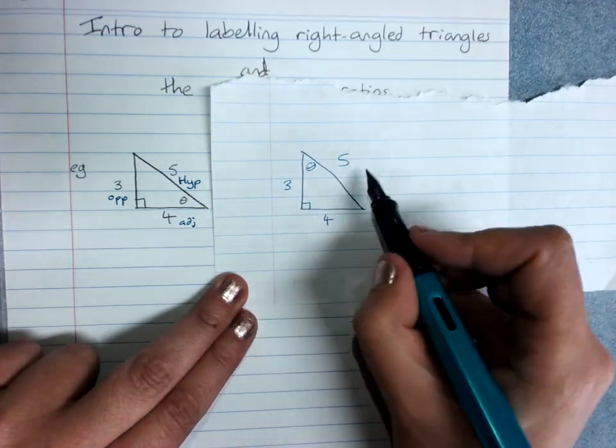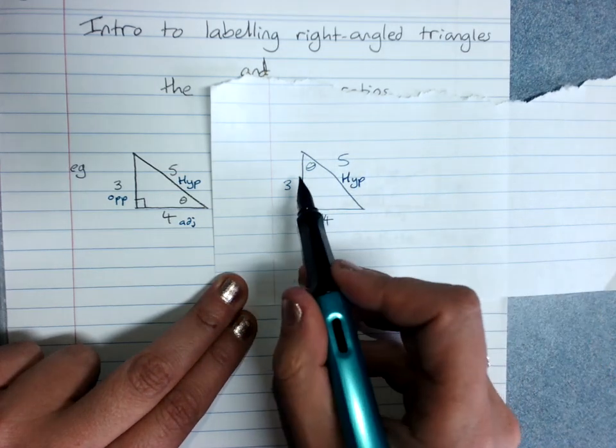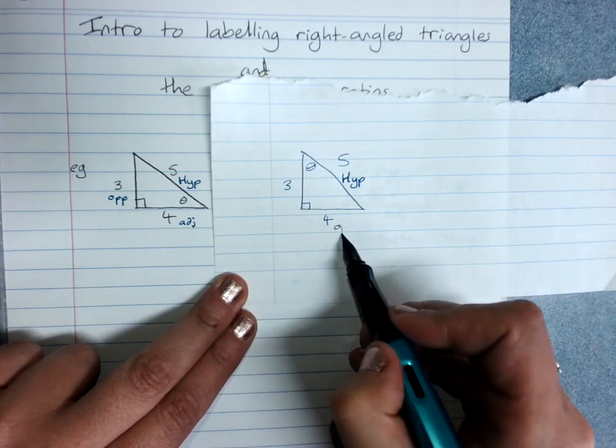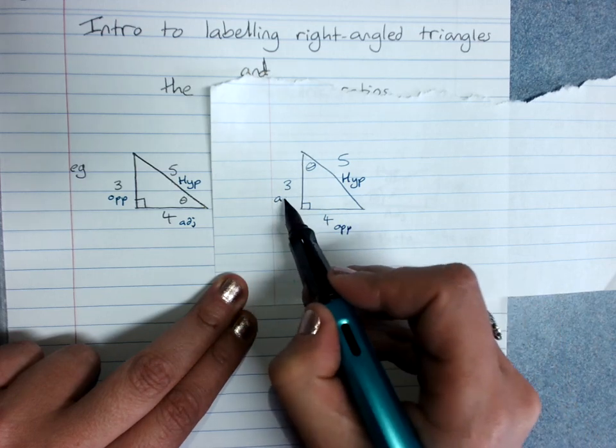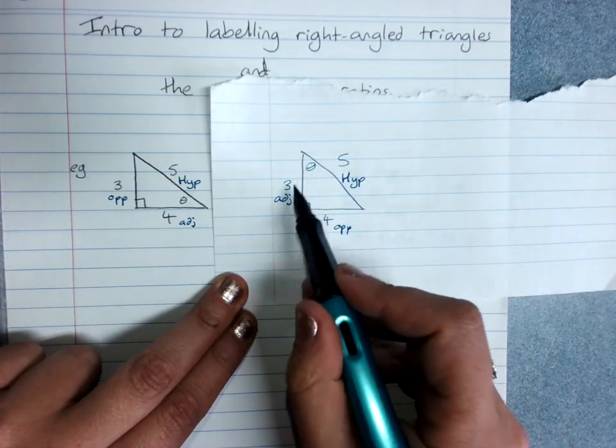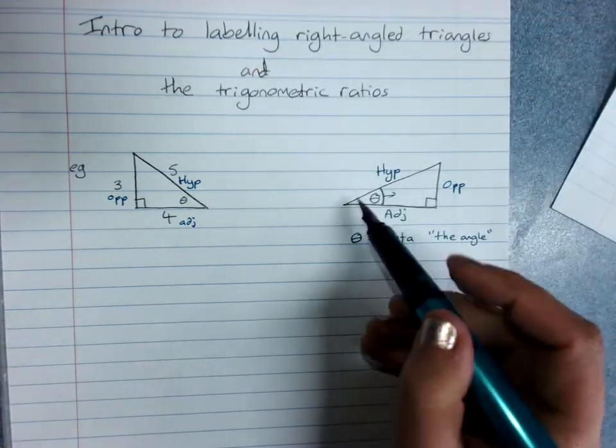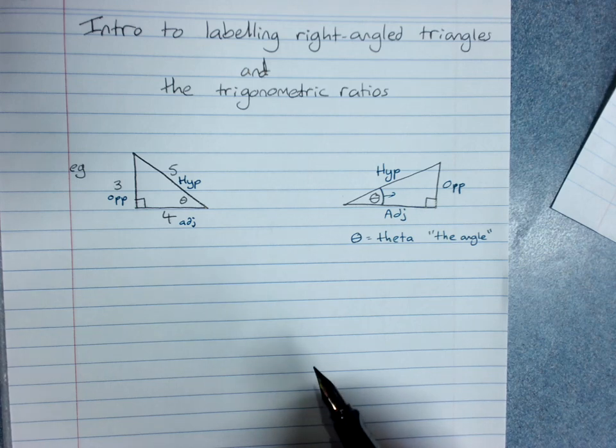then the hypotenuse is still the same. It's the longest side, it's opposite the right angle. But now four is the opposite, and three is the adjacent. So it very much depends on where the angle is that matters. And the angle will be marked either by theta or by having its size given.